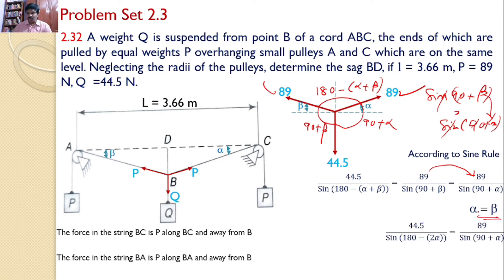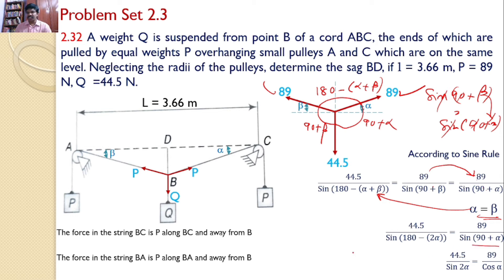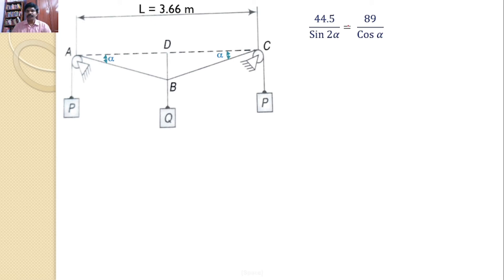Substituting alpha equals beta into the first expression: 44.5 divided by sine(180 minus 2·alpha) equals 89 divided by sine(90 + alpha). The only unknown is alpha. Since sine(90 + alpha) equals cosine(alpha), and 44.5 cancels as a factor of 89, after cross multiplication we get 2·sine(2·alpha) equals cosine(alpha).